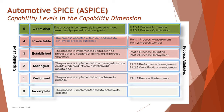Level 4 is predictable: the process operates within defined limits to achieve its outcomes, following strict measurements and control, meeting deadlines very strictly with tight schedules. The process attributes for Level 4 are process measurement and process control. Level 5 is optimizing: the process is continuously improved to meet current and projected business goals — you're contributing further to create something new or update practices not generally seen elsewhere. Its process attributes are process innovation and process optimization, adding value to product quality.